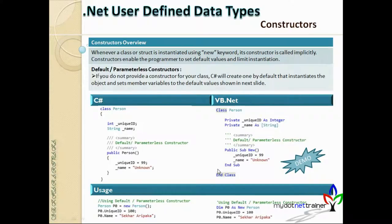Here you can see syntactical differences between VB.NET and C# side by side. C# is a case-sensitive language and VB.NET is not. In C#, keywords are all lowercase — for example, 'class', 'int', 'public' all start with lowercase. VB.NET is more of an English-style language following English grammar syntax, so all keywords start with a capital letter, like 'Class' with a capital C and 'Public' with a capital P.